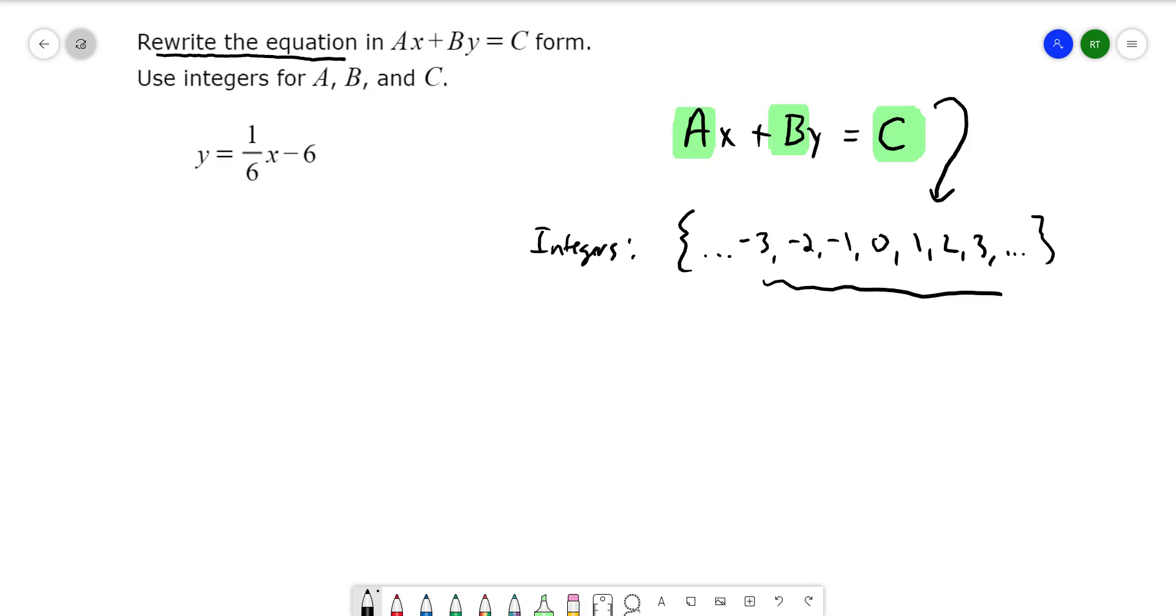Get the X term on the left, the Y term on the left, and then the term without the variable, which in math we call that the constant. We want the constant on the right as well. And once you meet those conditions, you have what is called standard format.